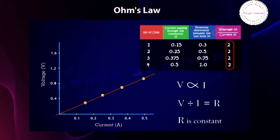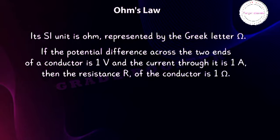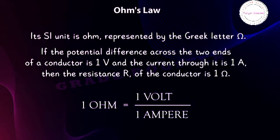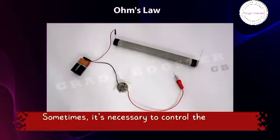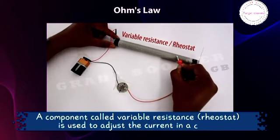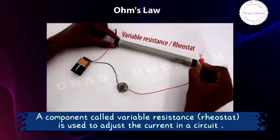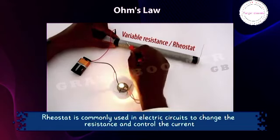The SI unit of resistance is the ohm, represented by the Greek letter omega (Ω). If the potential difference across two ends of a conductor is 1 volt and the current through it is 1 ampere, then the resistance is 1 ohm: 1Ω = 1V/1A. If the resistance is doubled, the current becomes half. A variable resistance or rheostat is used to adjust the current in a circuit without changing the voltage source, and is commonly used in electric circuits to change the resistance and control the current.